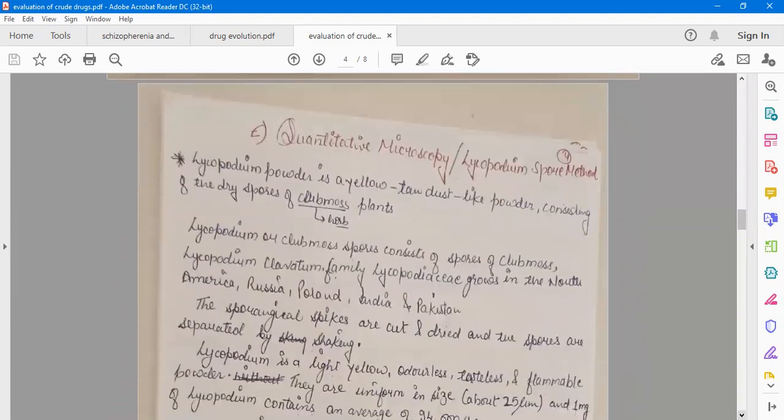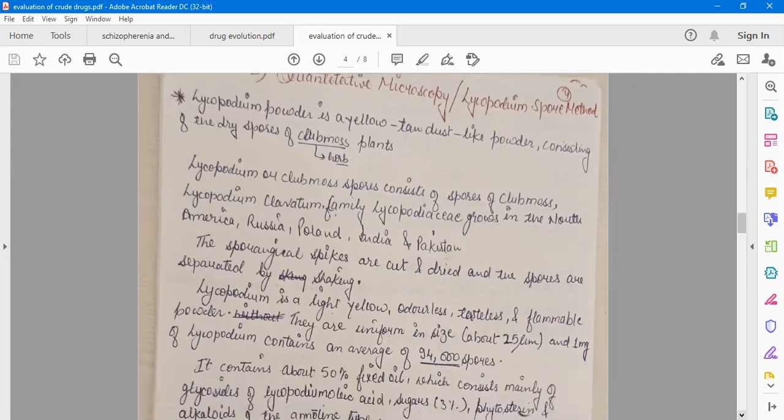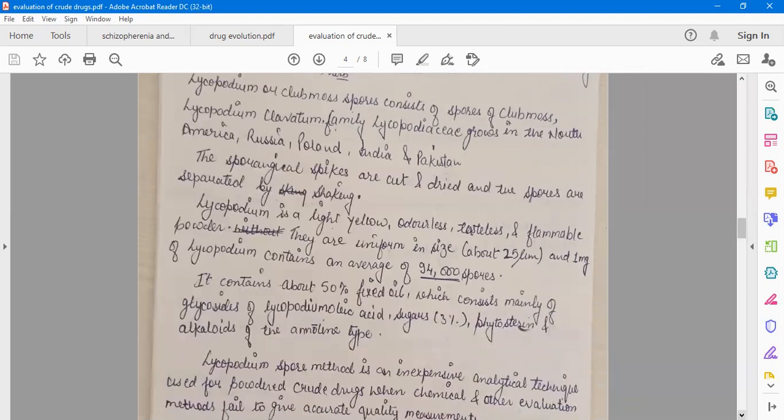The last one is the lycopodium spore method, which is a very important method. Lycopodium spore is a yellow powder consisting of the dry spores of club moss plant. Lycopodium or club moss spores consists of spores of club moss Lycopodium clavatum, family Lycopodiaceae. It grows in North America, Russia, Poland, India, and Pakistan. Lycopodium is a light yellow, colorless, tasteless, and flammable powder. They are uniform in size at 25 micrometers, and one milligram of lycopodium contains an average of 94,000 spores. It contains about 50 percent fixed oil.